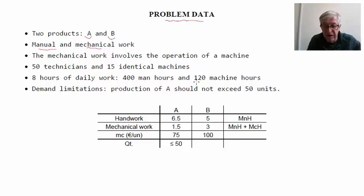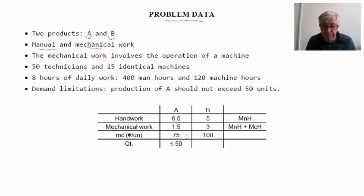There are also limitations related with the market: the production of A should not exceed 50 units because there is no demand for more. We also have the contribution margin of each product — product A provides 75 euros per unit, while product B provides 100 euros per unit. The technical requirements are: A needs 6.5 hours of manual work and 1.5 of mechanical work, while B needs 5 and 3.